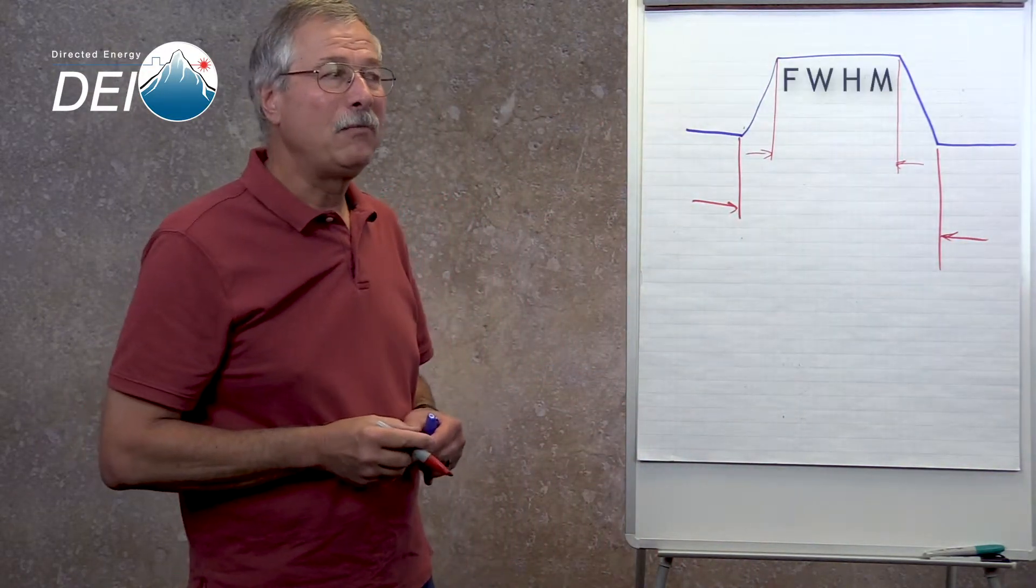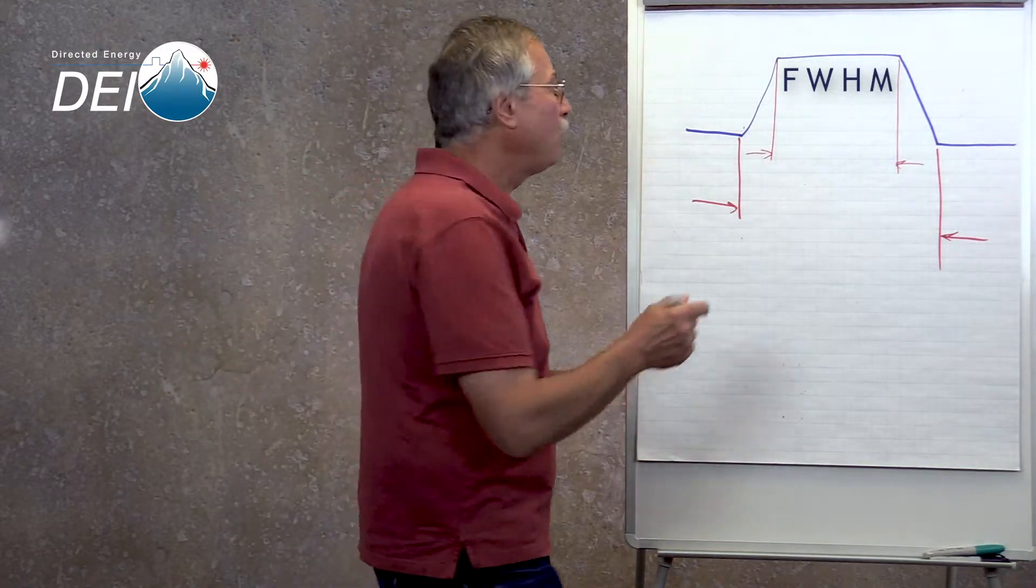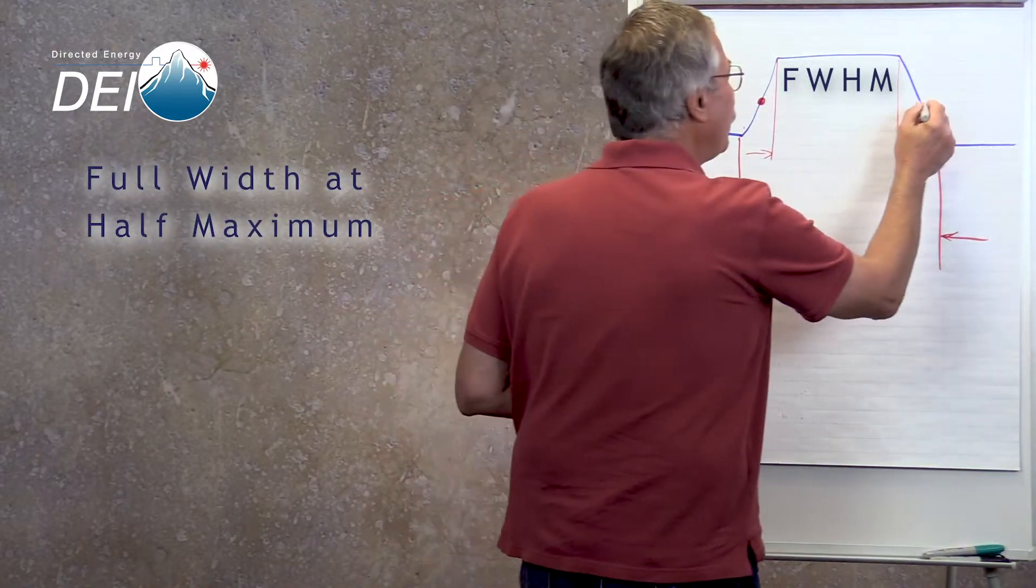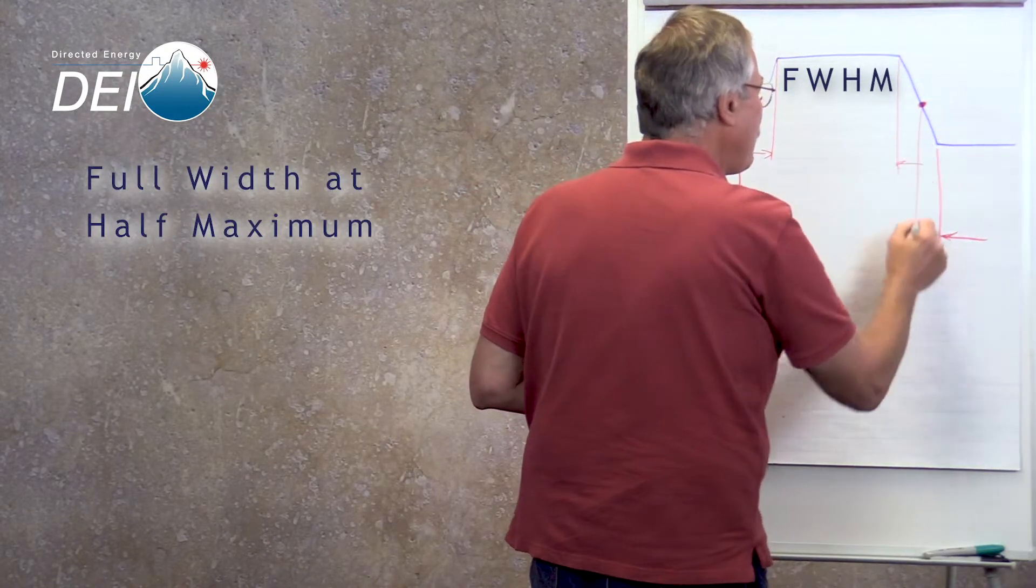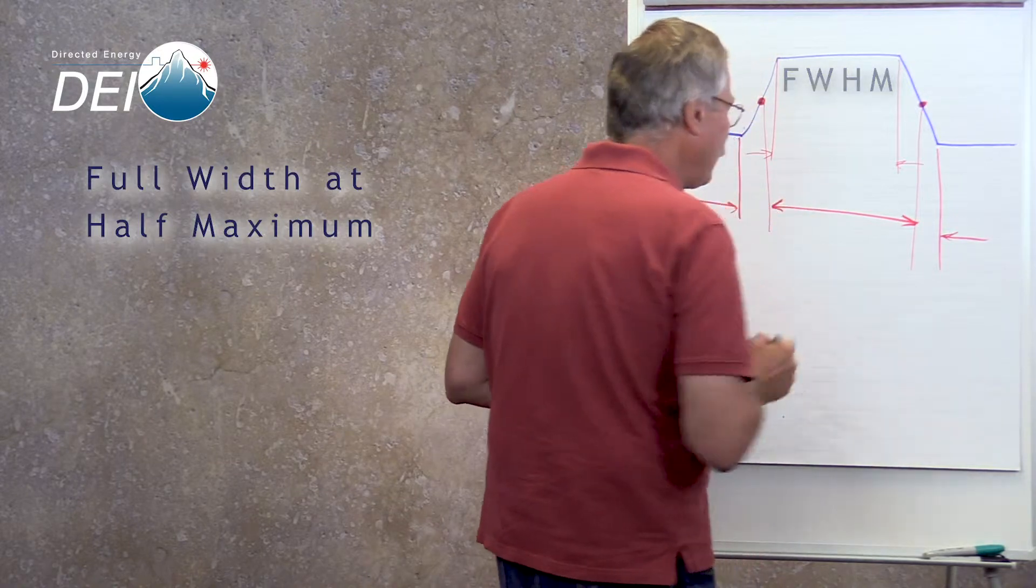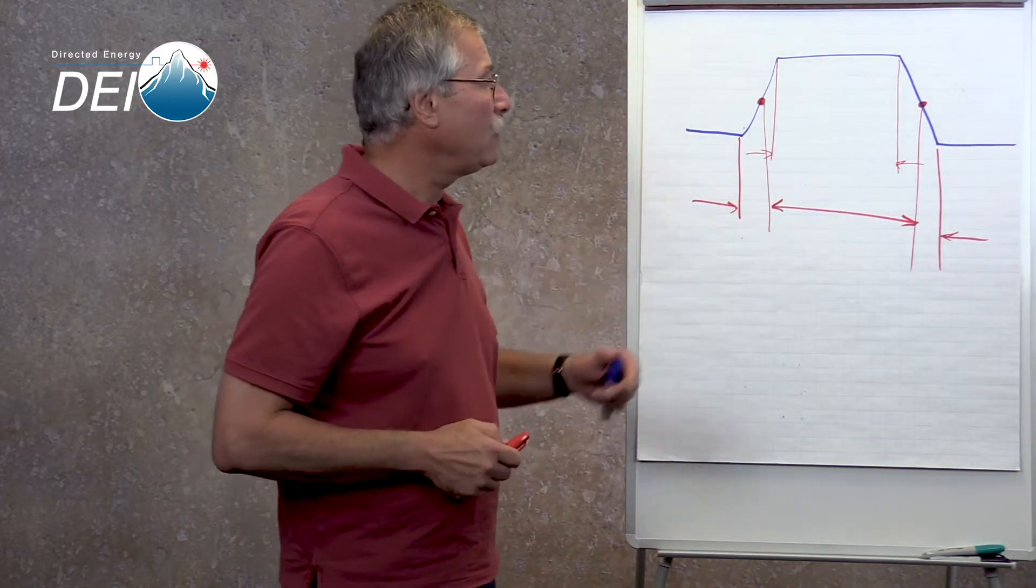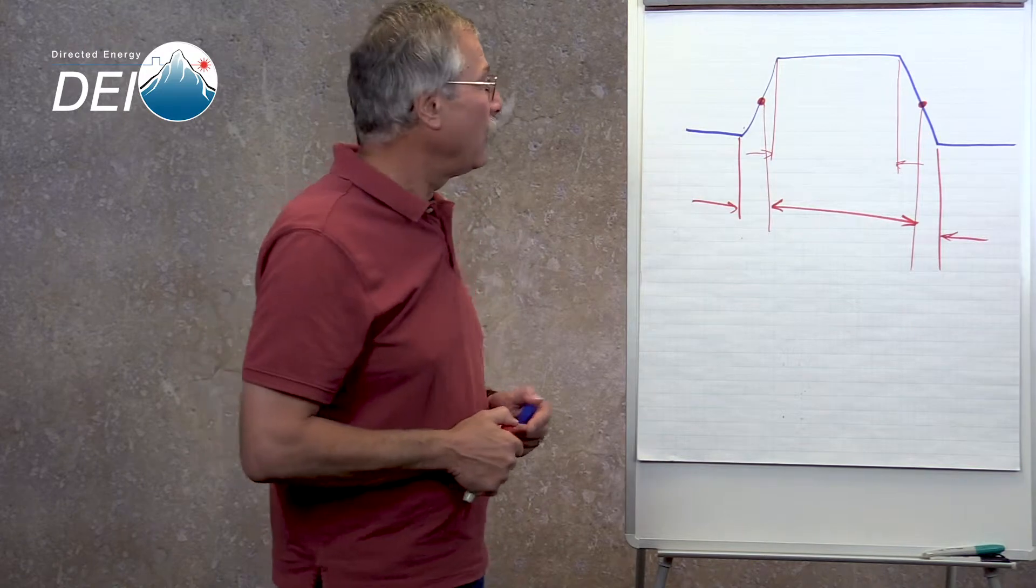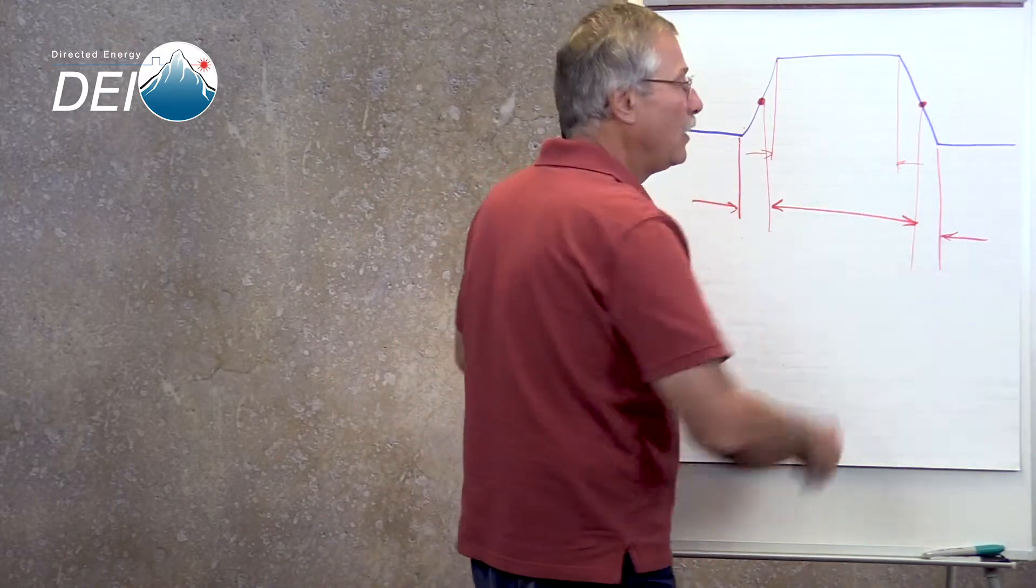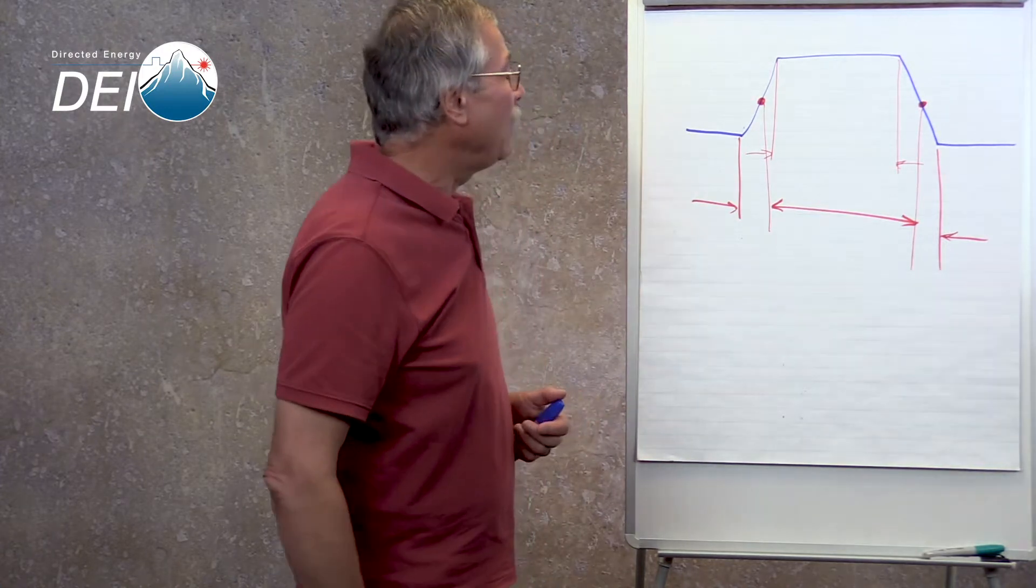We're talking about FWHM, or full width at half maximum. This is the pulse width in typically nanoseconds, and it's good to remember this because obviously these numbers will not give you the exact same value.